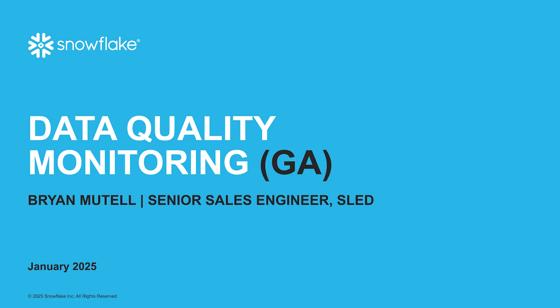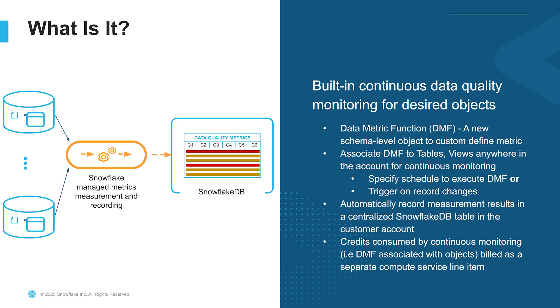I'll walk through what this feature is, why it matters, and how it works. Snowflake's data quality monitoring is a built-in continuous monitoring solution that ensures the data you rely on is accurate and trustworthy, helping you maintain trusted, high-quality data without third-party tools. It works using data metric functions — DMFs — a new schema-level object that defines and measures key quality metrics. You associate DMFs with tables or views anywhere in your Snowflake account and set them to run on a schedule or trigger them when data changes.